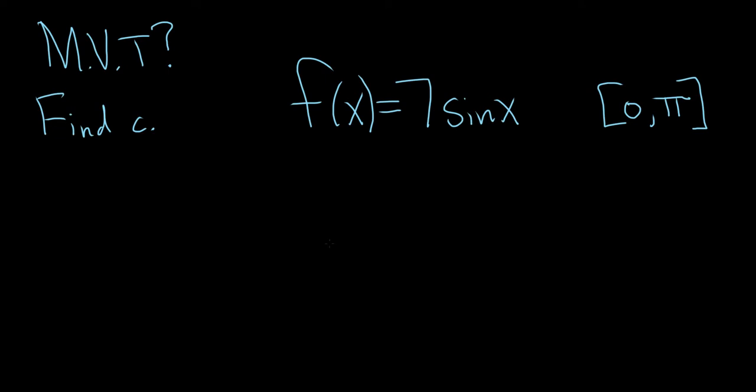In this problem, we're being asked if the mean value theorem applies to this function, 7 times sine x, on the interval 0 to π. And if it does, we have to find the value of c.